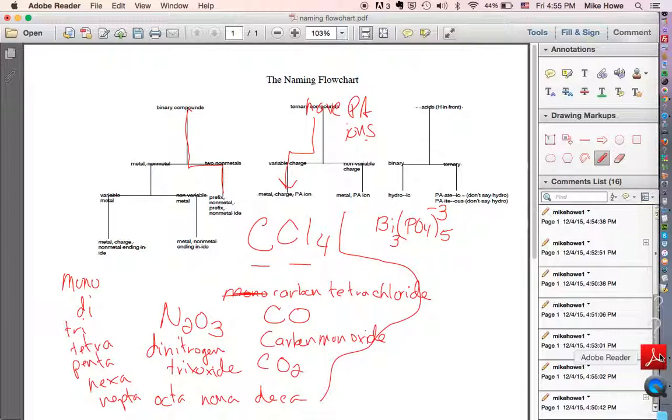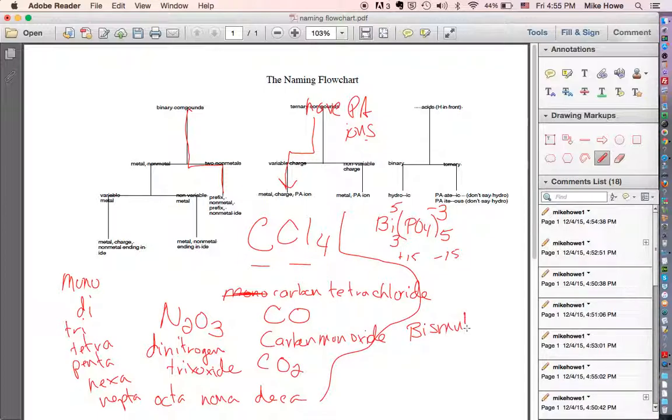There are 5 phosphates. So 5 times 3 is negative 15. So that means that this has to be positive 15 to make the charges equal. There are 3 atoms of bismuth. So if the total is 15 and there are 3 atoms making 15, you're going to divide 15 by 3 and you get 5. So the proper name is bismuth-5-phosphate, or bismuth(V) phosphate.